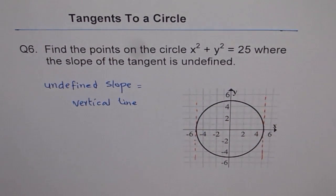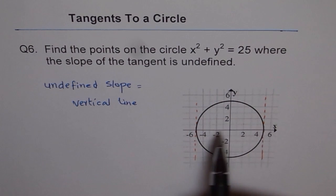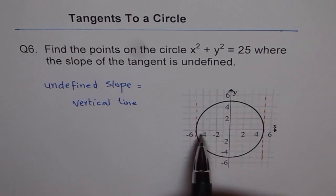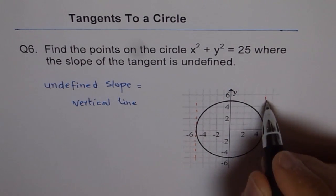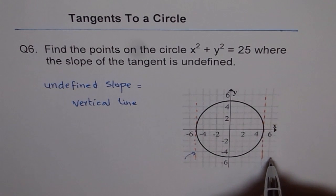Whenever you have a circle, you will note that on its x-intercepts like this, if the origin is the center, you have vertical lines as a slope. So these are the tangents whose slope is undefined.